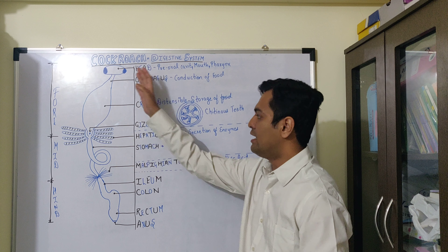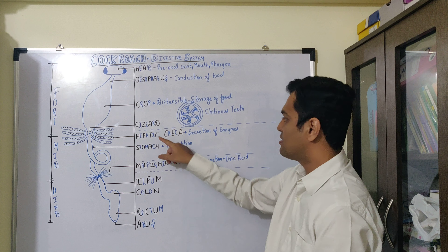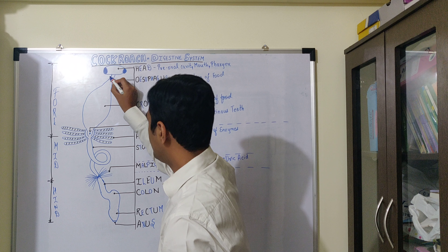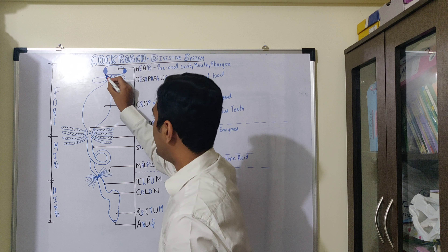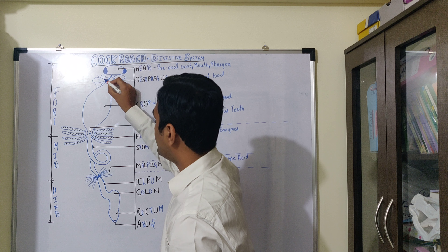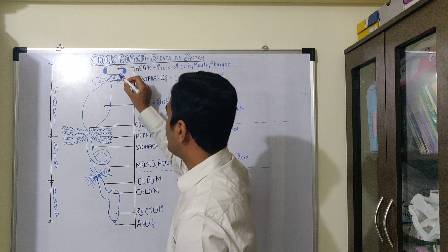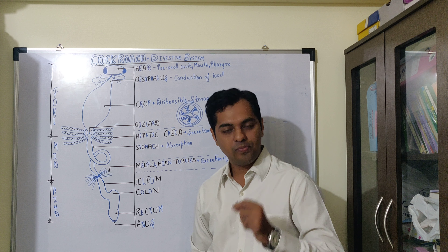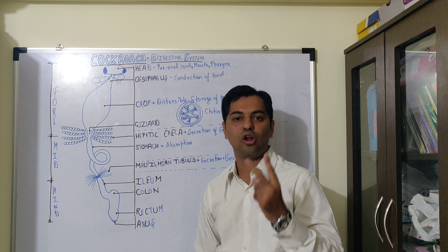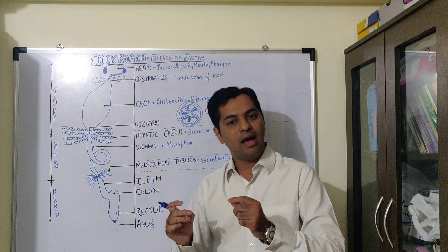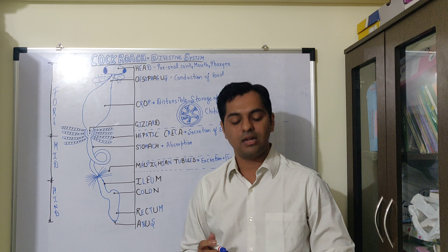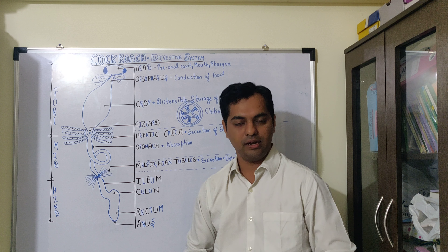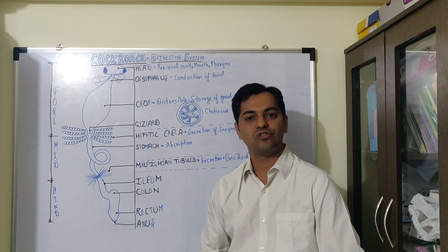So we have discussed about the entire passage of the alimentary canal, and the digestive gland discussed is the hepatic caeca. Apart from that, cockroach also consists of a pair of salivary glands. Each salivary gland has a bag-like structure known as the reservoir that helps in storage of saliva, and two glandular lobes which help in secretion of saliva. These are connected to the base of the hypopharynx through a common salivary duct. This was the entire discussion about the digestive system of cockroach. Thank you.